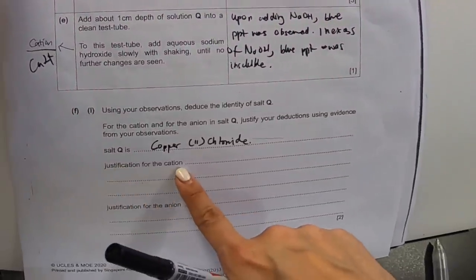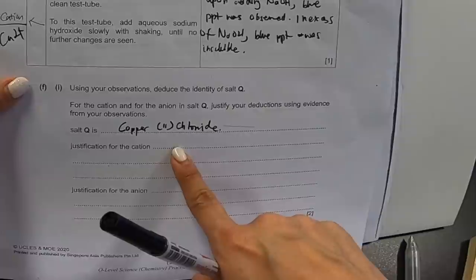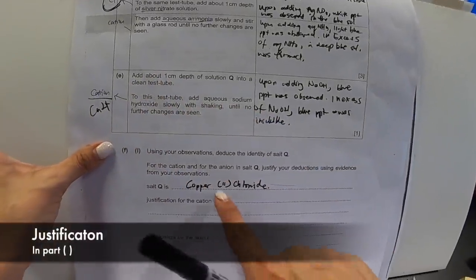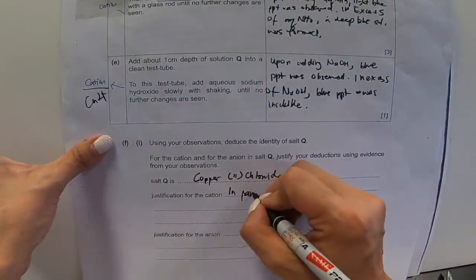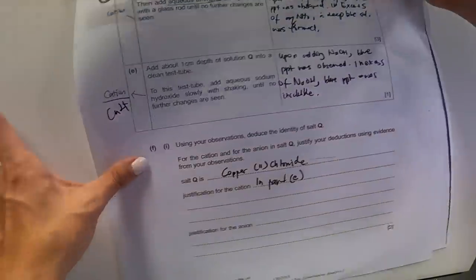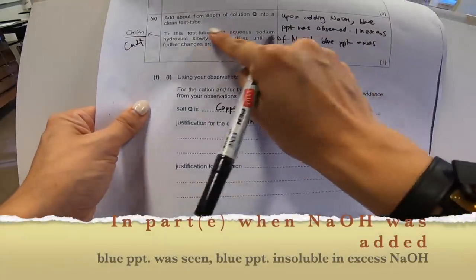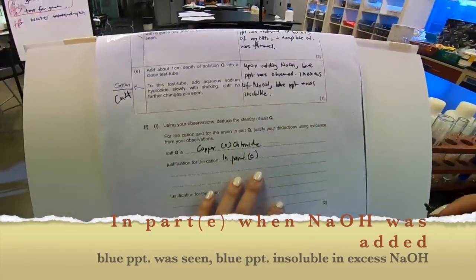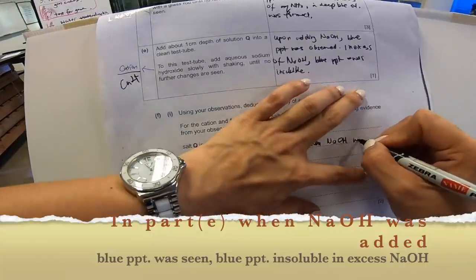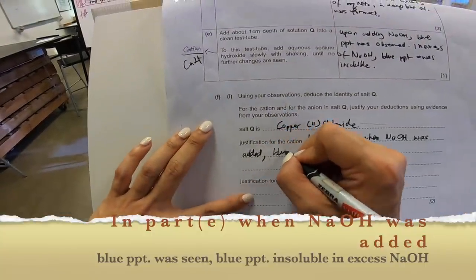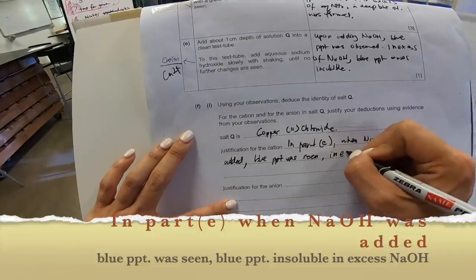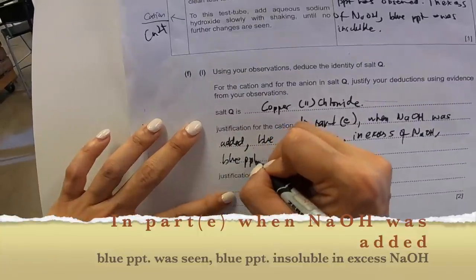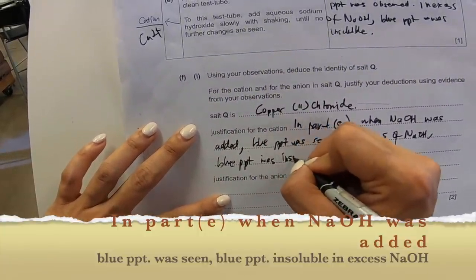Justification for the cation. In order for us to justify the cation, let's remember that justification require you to tell me the parts. So start with in part E. What do you do? Because when NaOH is added, a blue PPT was observed. So I'm going to write it down. Let me fold the paper so that I can write down. And in excess, the blue PPT was insoluble.